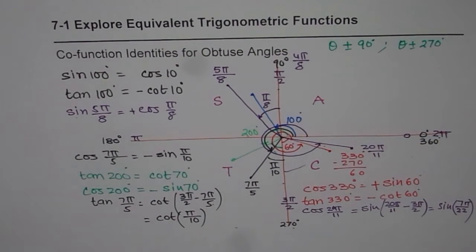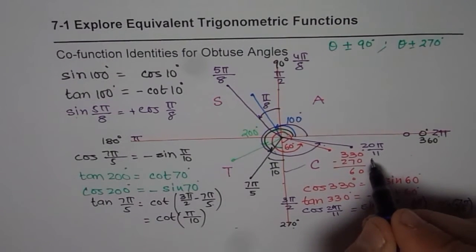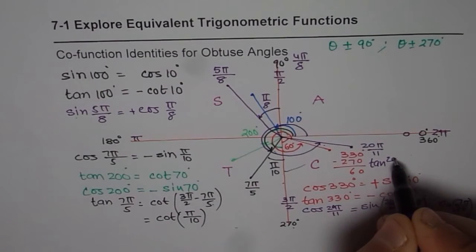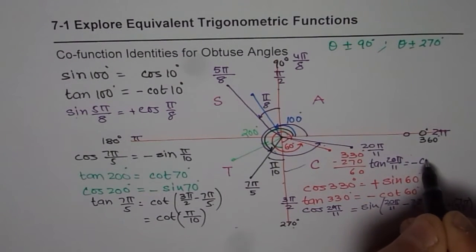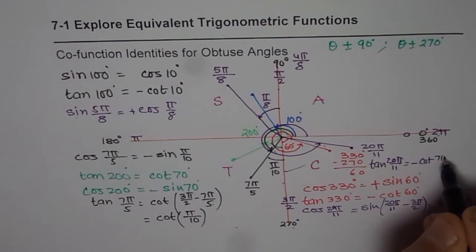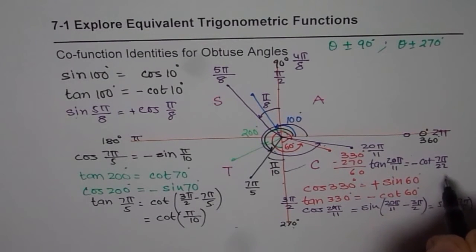You get the idea. I hope with this, the concept of working is clear. If I have tan 20 pi by 11, it could be written as minus cot 7 pi by 22, right? So that is how we can write co-function identities.